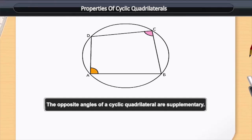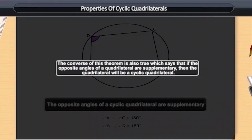Look at angle A and angle C. These are the opposite angles and, according to the property, angle A and angle C are supplementary. Therefore, angle A plus angle C is equal to 180 degrees. In addition, angle B and angle D are also opposite angles, and the sum of angle B and angle D is also equal to 180 degrees.